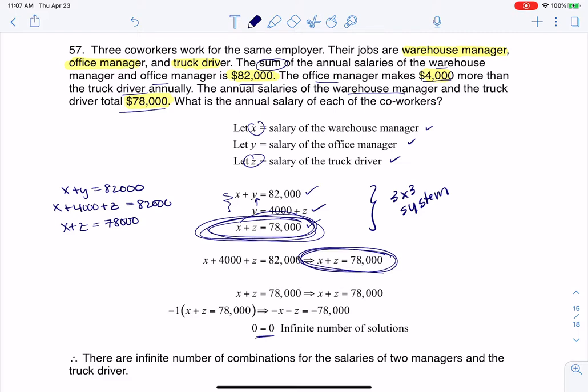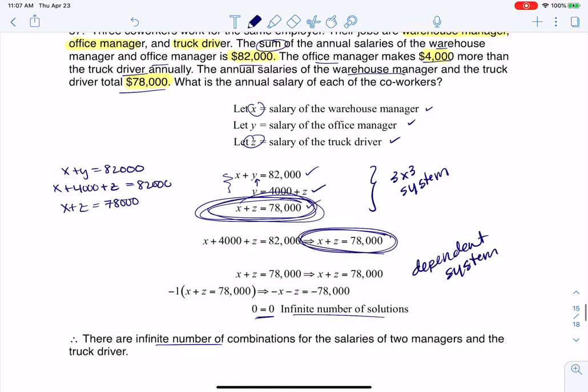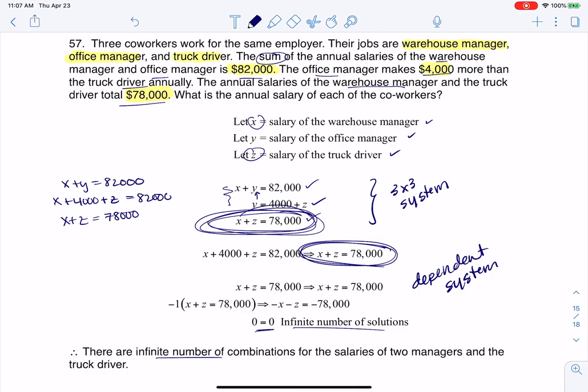I wind up at this zero equals zero meaning I have an infinite number of solutions, so this is kind of a mess. This is a dependent system which is fine, we just need to recognize it. So there's actually an infinite number of combinations for the salaries of the two managers and the truck driver. All right, thanks so much everyone. Bye.